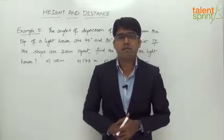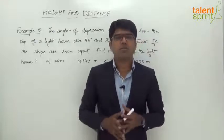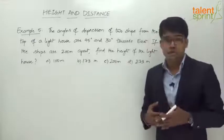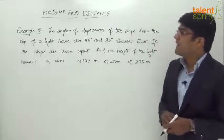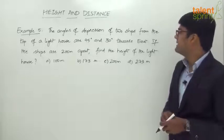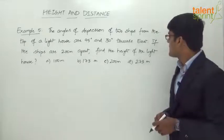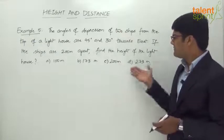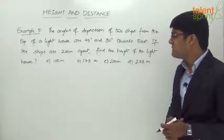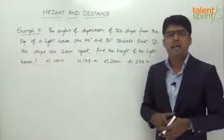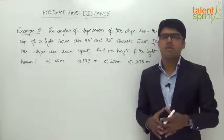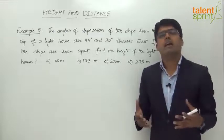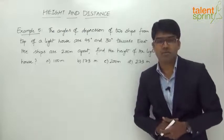Let us now look at the next example based on angles of depression. The angles of depression of two ships from the top of a lighthouse are 45 degrees and 30 degrees towards east. If the ships are 200 meters apart, find the height of the lighthouse. The answer options are 100 meters, 173 meters, 200 meters, and 273 meters. It's all about drawing the right diagram and using the proper trigonometric ratios.